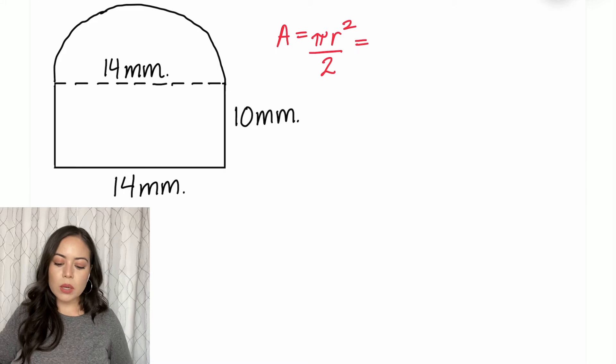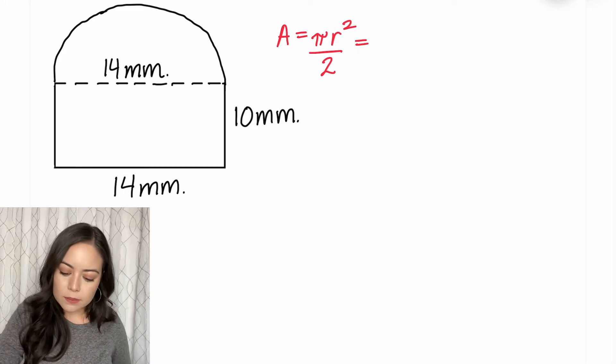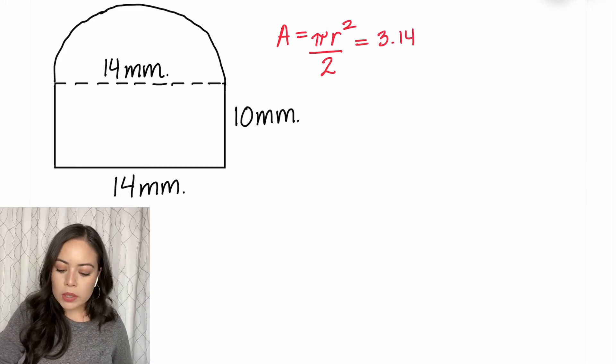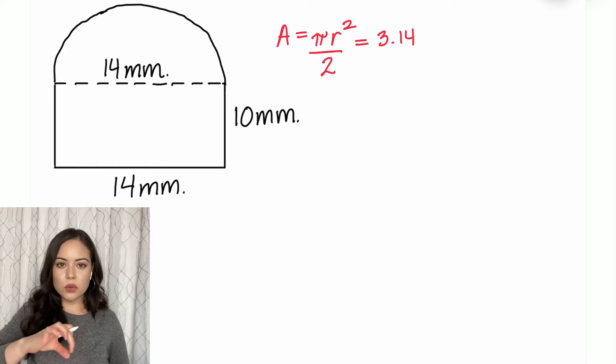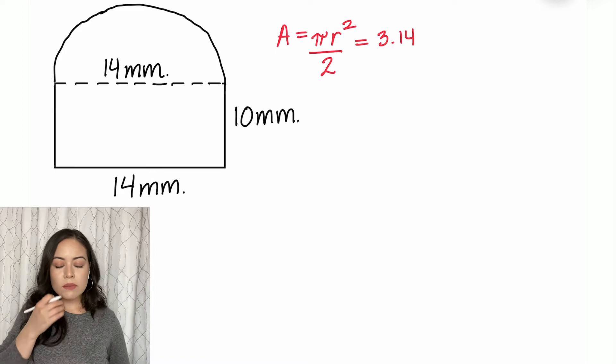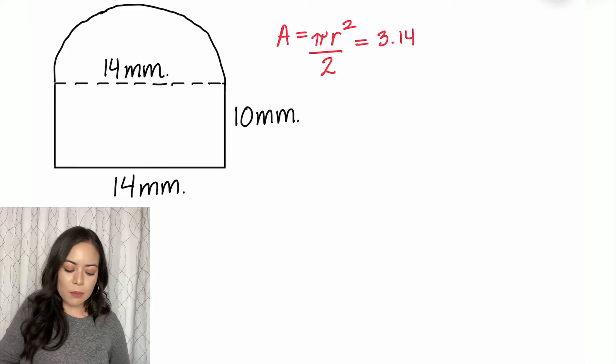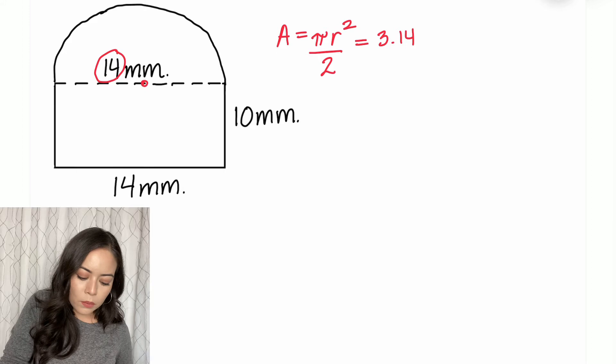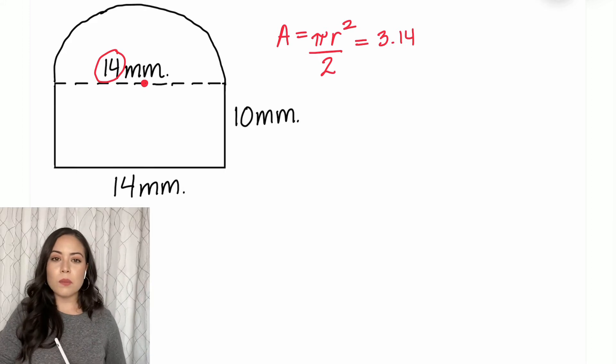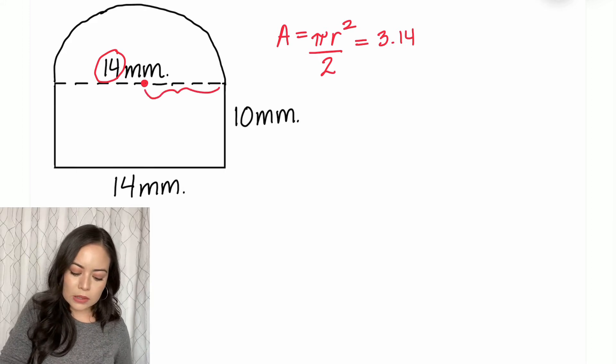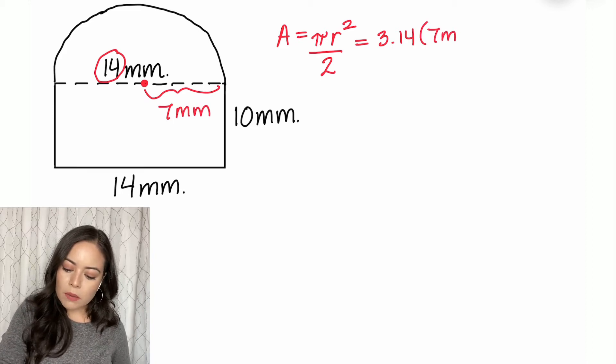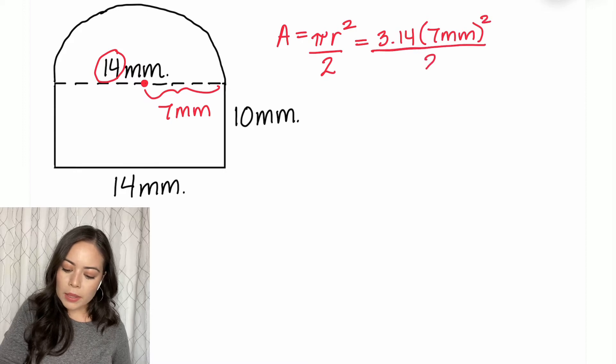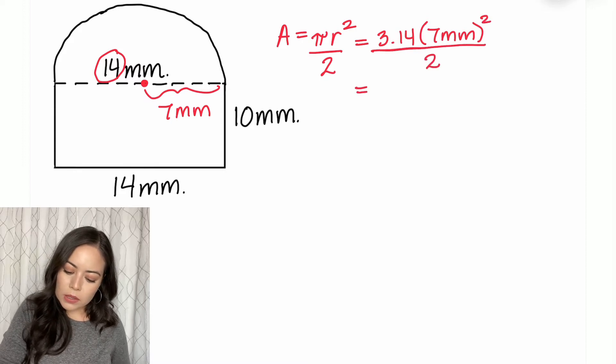I'm going to use 3.14 as pi. Notice we need the r value - r represents radius, which is from the center of a circle to the edge. We have diameter, which is 14. So we take half of that value to find the radius, which is 7 millimeters. I'm going to plug in 7 millimeters for r, square that, and divide it all by two.